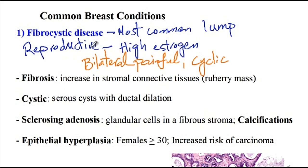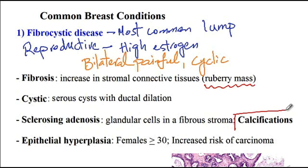There are different forms of fibrocystic disease. The fibrosis type has increased stromal connective tissue giving it a rubbery mass texture. Next, the cystic disease has serocysts with ductal dilations. Then there is sclerosing adenosis, where there are glandular cells in the fibrostroma. This type has calcifications, so it's important not to confuse calcification on mammogram with cancer.